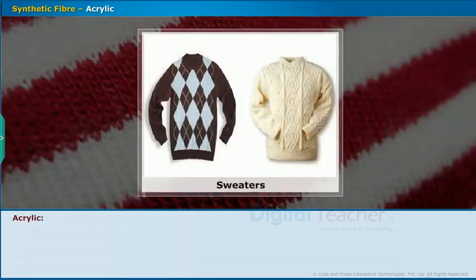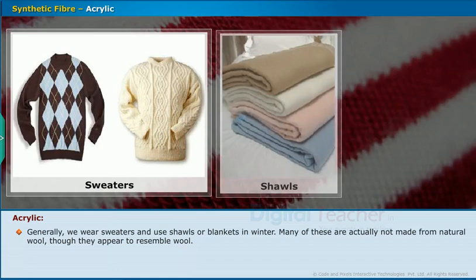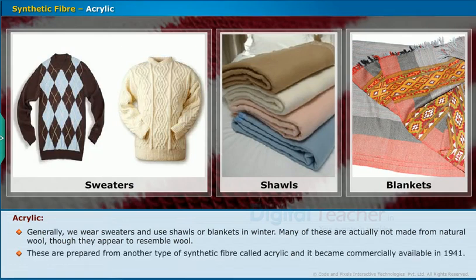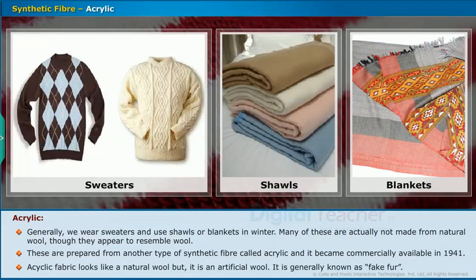Now let us study about acrylic, which is another type of synthetic fiber. Generally, we wear sweaters and use shawls or blankets in winter. Many of these are not made from natural wool, though they appear to resemble wool. These are prepared from another type of synthetic fiber called acrylic, which became commercially available in 1941. Acrylic fiber looks like natural wool but it is an artificial wool — it is generally known as fake fur.